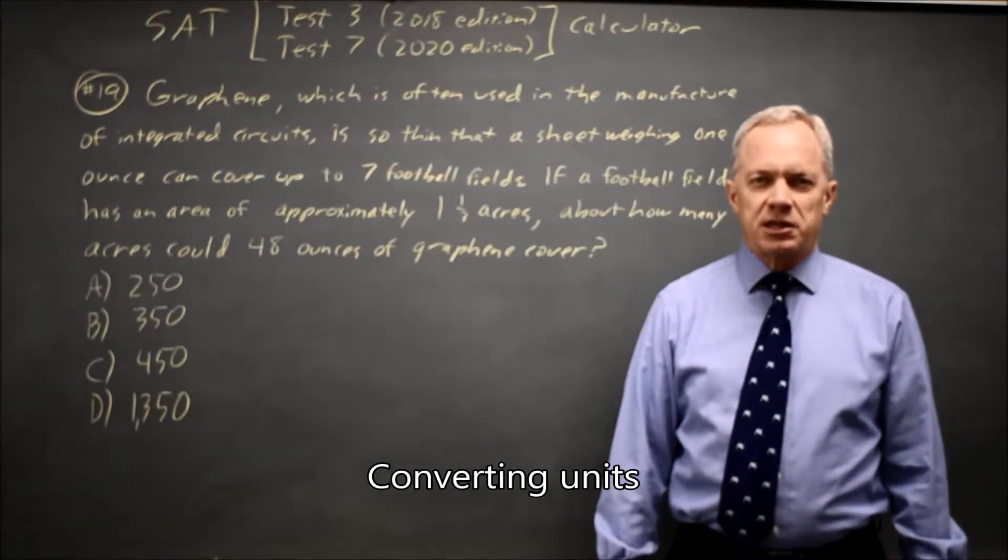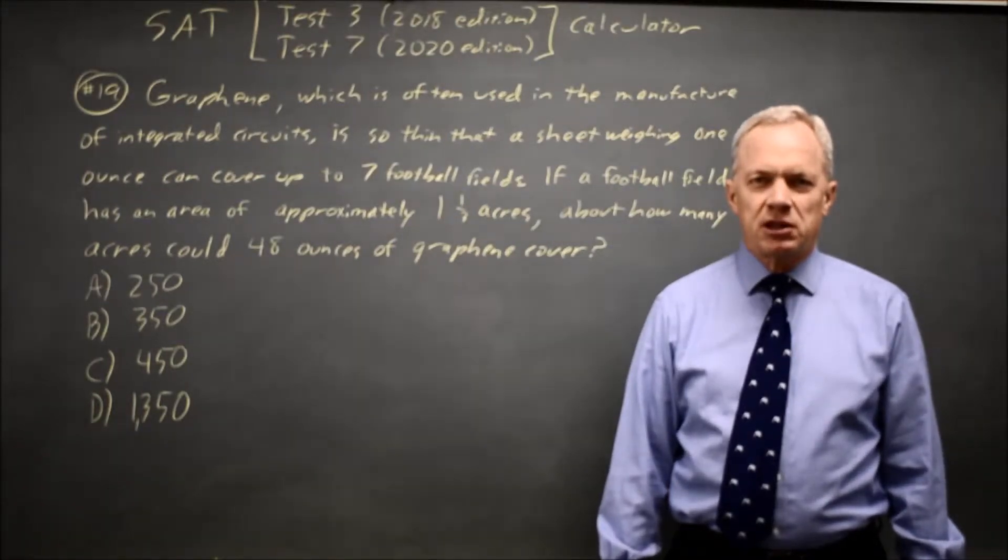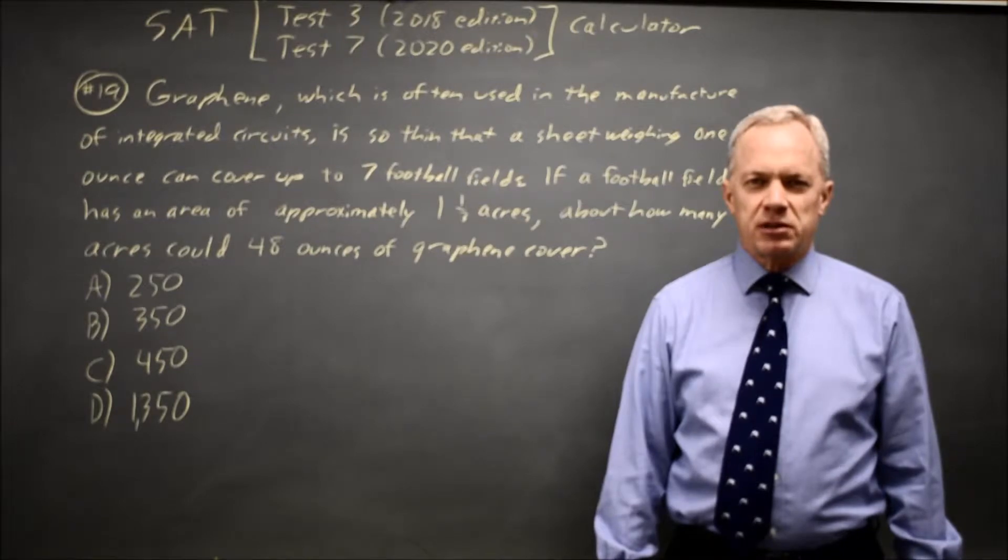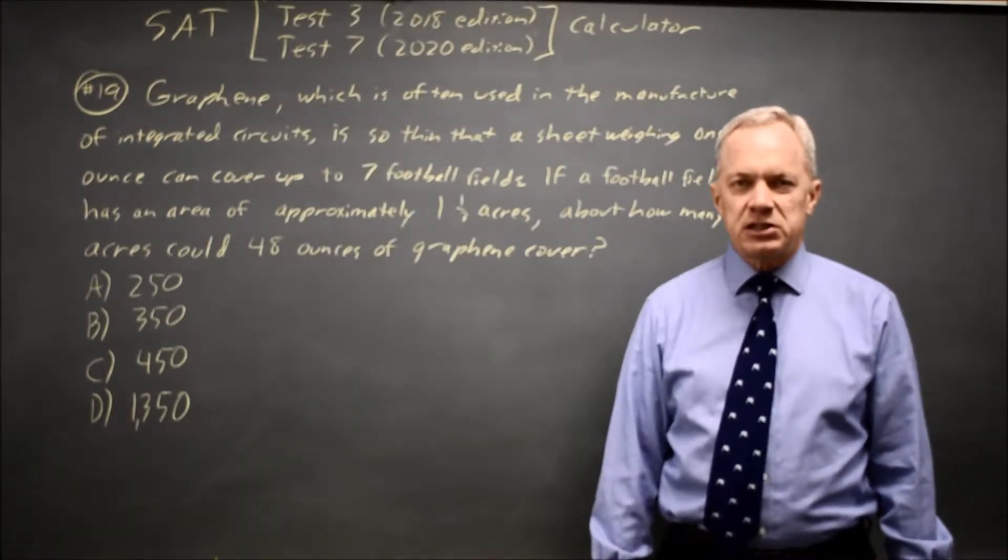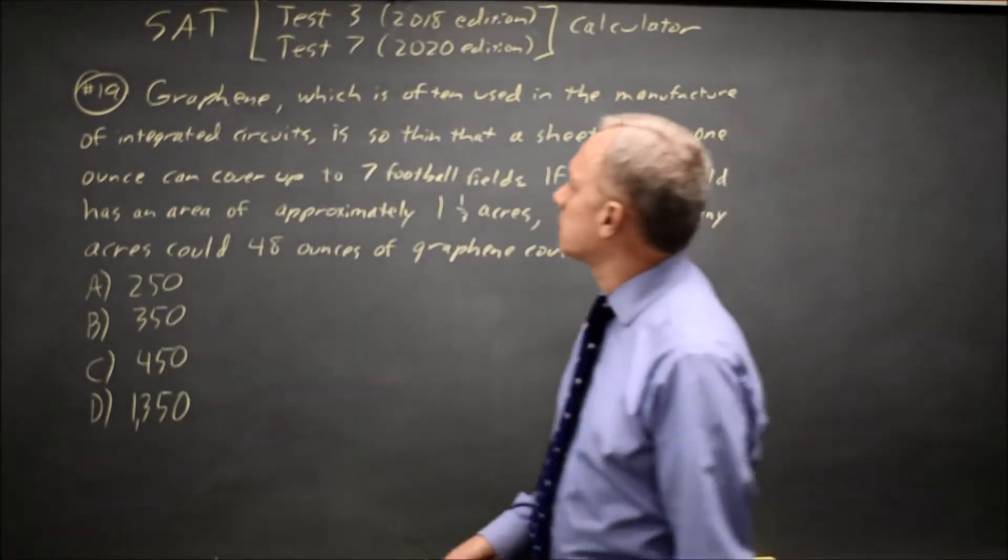This is calculator question number 19 from the College Board Practice Book. College Board describes the use of graphene as a thin layer and asks how many acres you could cover with 48 ounces of graphene. This is a unit conversion problem, so let's look at that.